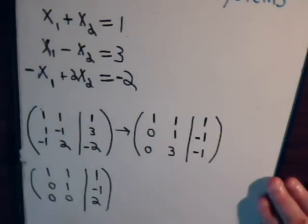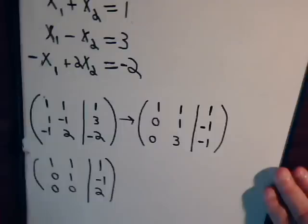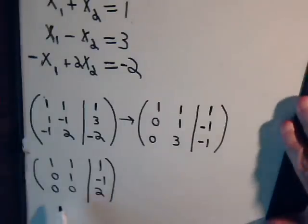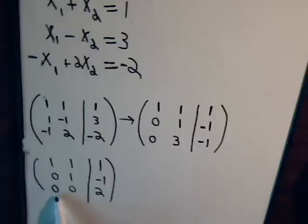So now the matrix looks like this and hopefully you can see we have a problem. The problem is here we have 0 times x1 plus 0 times x2 equals 2, so essentially we have 0 plus 0 equals 2.